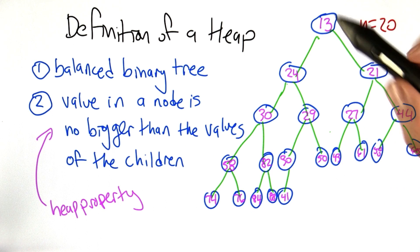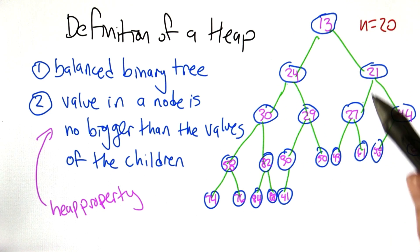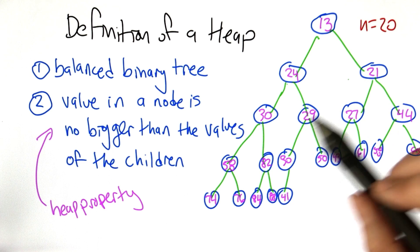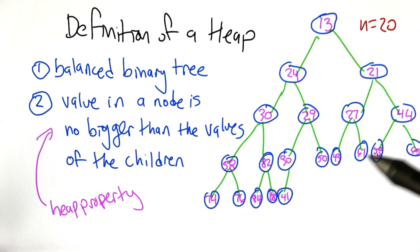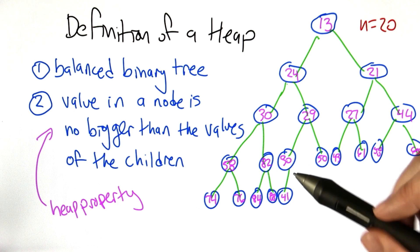And so this is an interesting property. So if you read left to right, top to bottom, 13, 24, 21, 30, 29, 27, it's not really sorted. The numbers kind of go up and down.